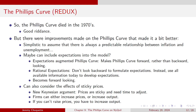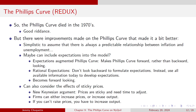There's another concept: sticky prices. This is where we get into New Keynesian model-type arguments — prices are sticky and need time to adjust. Firms can either increase prices or increase output. If you can't raise your price, you have to increase your output instead.